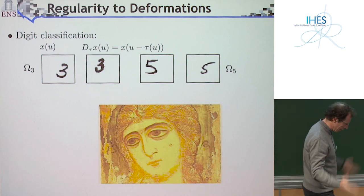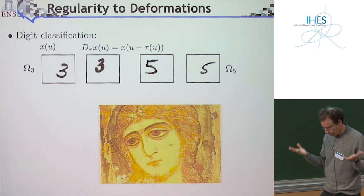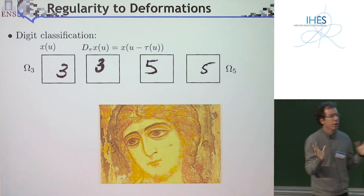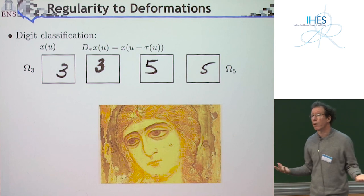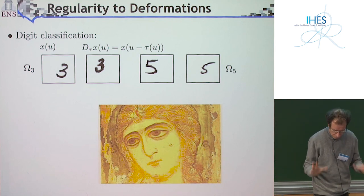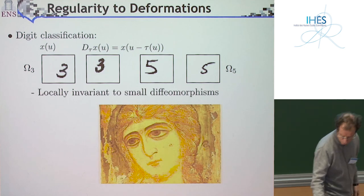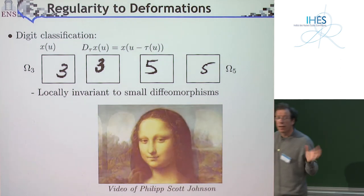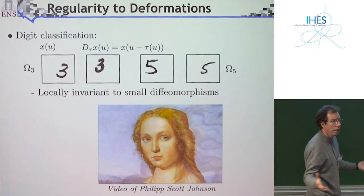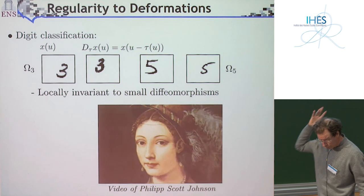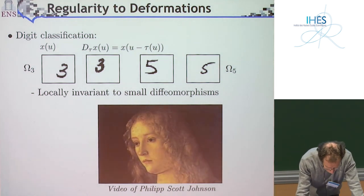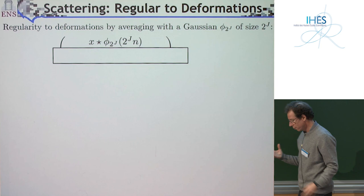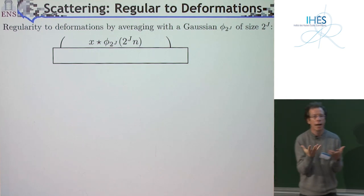The second problem is about classification. One property you see in classification is that when your digit moves or is deformed, if the deformation is not too big it typically belongs to the same class—a 3 stays a 3, a 5 stays a 5. For paintings, if you move on your diffeomorphism group, as long as the diffeomorphism is not too big, you'll recognize the same painting; move further and you cross to another. Moving on the diffeomorphism group, you can traverse essentially all European paintings in the Louvre. Diffeomorphism is a key element of regularity.